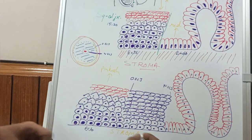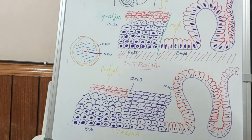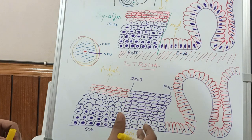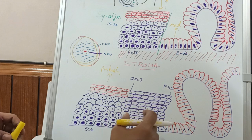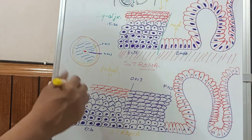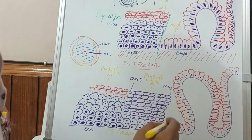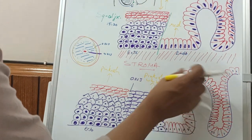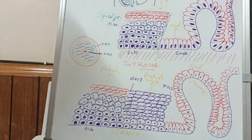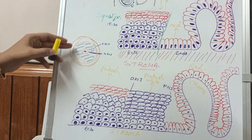The squamous metaplasia area — the transformation zone or TZ zone — lies between the original squamocolumnar junction and the new squamocolumnar junction. This area may consist of immature squamous metaplasia, mature squamous metaplasia, or some columnar cells, and it will appear pinkish-white. The endocervical area with its single cell layer will appear red. So summarizing: the ectocervix is pink, the transformation zone is pinkish-white, and the endocervical area is red.